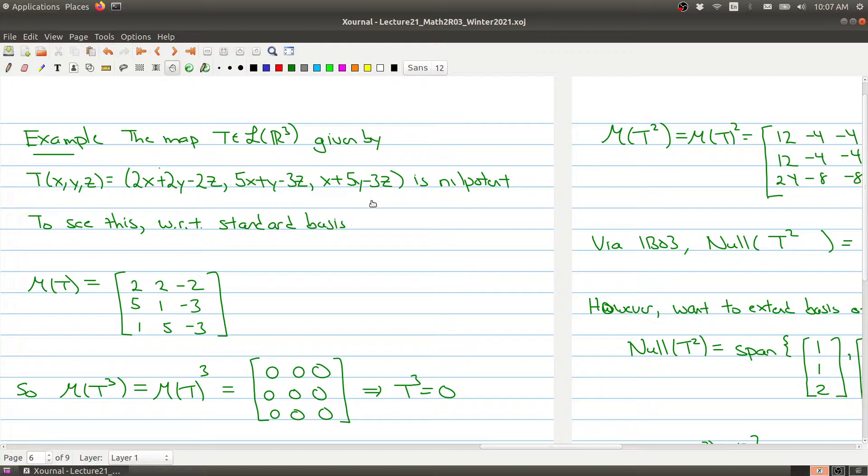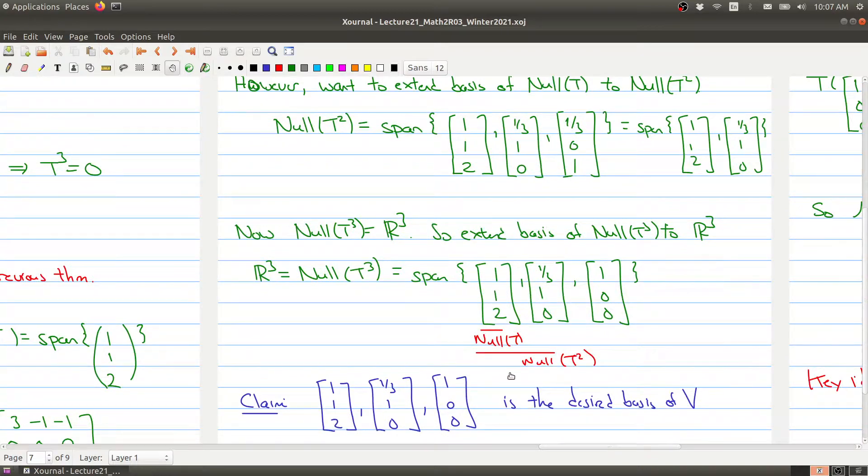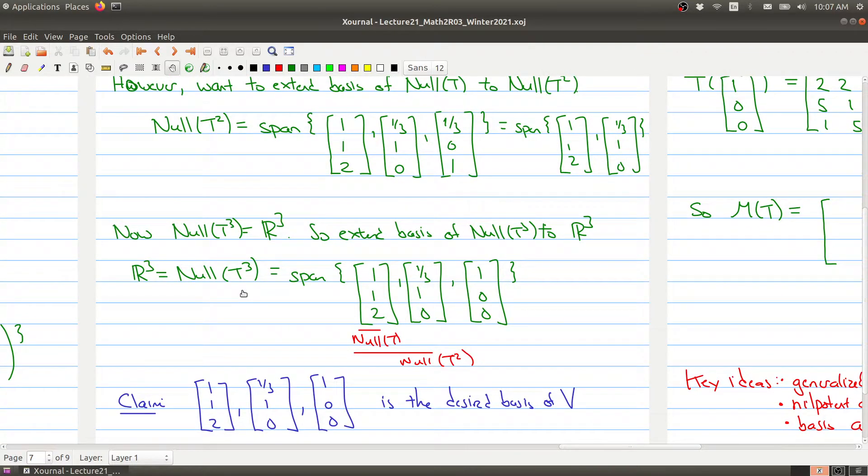And we've been looking at this nilpotent operator. Today what we've done so far is we found a basis for null of t cubed. So this is going to be all of R3. And we found a basis such that the first vector forms a basis for null t, the first two vectors form a basis for null t squared, and then all three vectors form a basis for null t cubed.